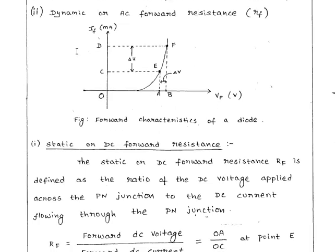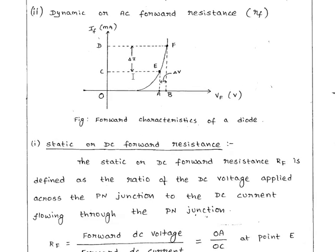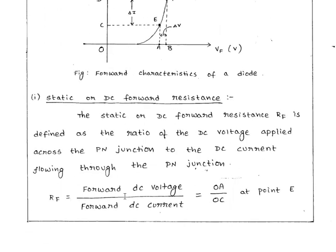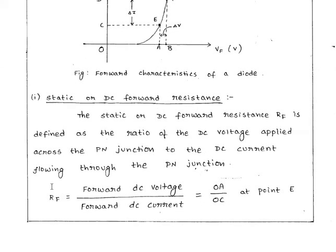I have two types of VI characteristics and two types of resistance. The static DC resistance is the ratio of voltage to current — forward DC voltage divided by forward DC current. This is also expressed as the forward DC voltage resistance at a given operating point.